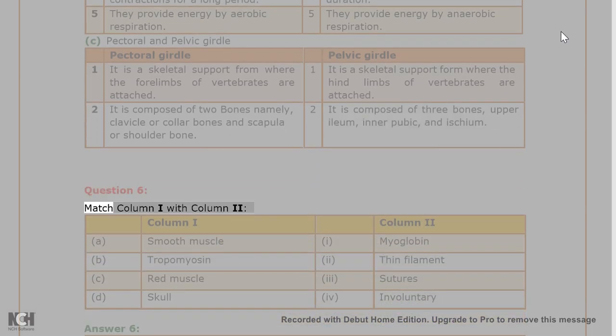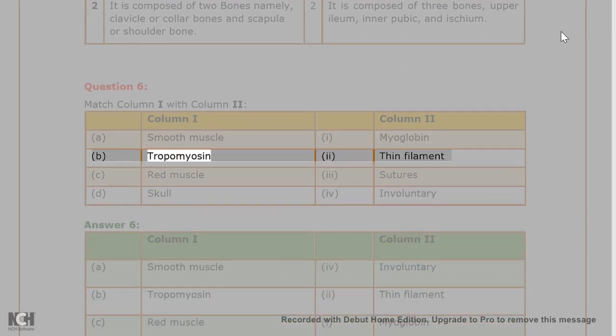Question 6. Match column 1 with column 2. Column 1: A. Smooth muscle. B. Tropomyosin. C. Red muscle. D. Skull. Column 2: 1. Myoglobin. 2. Thin filament. 3. Sutures. 4. Involuntary.